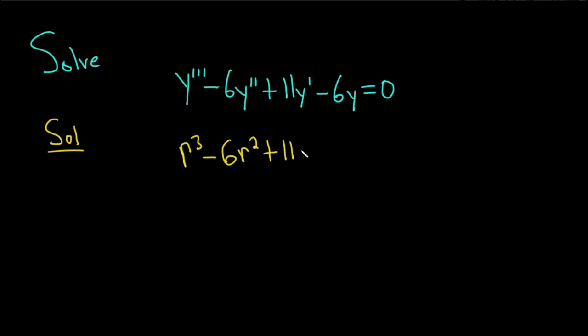This is the first derivative, so it's r to the 1, minus 6. And then if you think of y as the zeroth derivative, it's really r to the 0, so you don't have to write it. So then this is equal to 0.